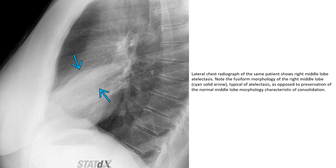The right middle-lobe atelectasis shows the fusiform morphology of the right middle lobe, indicated by the solid arrow, typical of atelectasis, as opposed to preservation of the normal middle-lobe morphology characteristic of consolidation.